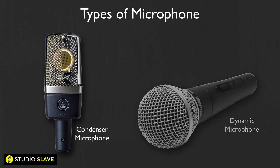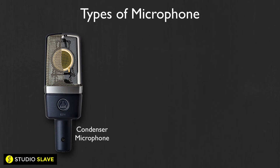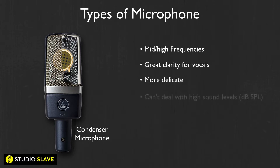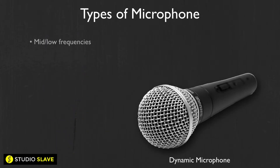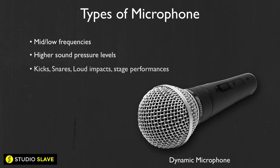Because of this, condenser mics are good for more high-frequency content and things like vocals, whereas dynamic mics are better for mid to low frequency material and things that are going to be much louder, because they're harder to damage. So for things like kick drums or any really loud high-SPL sounds, you're going to want to use a dynamic mic.